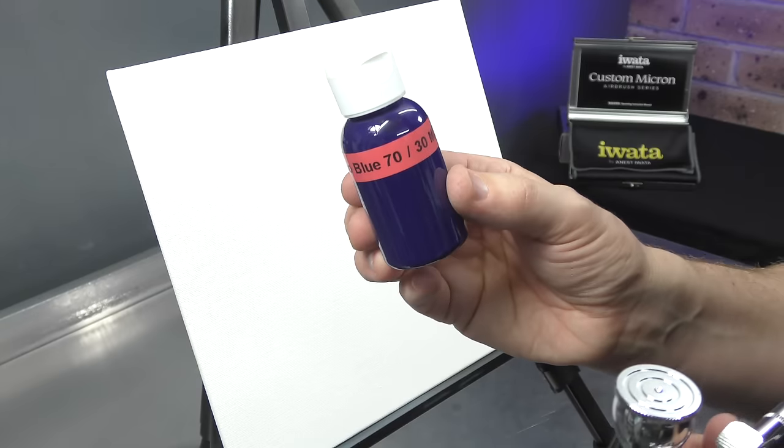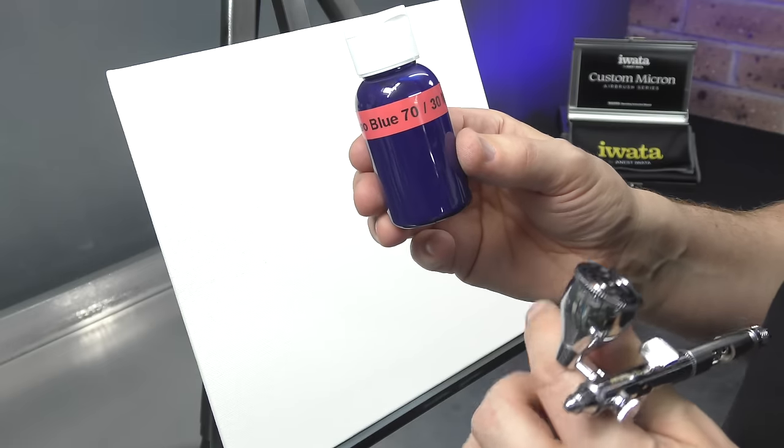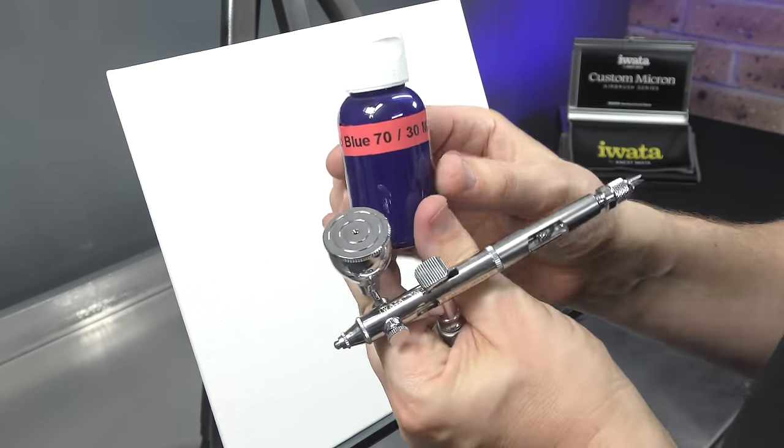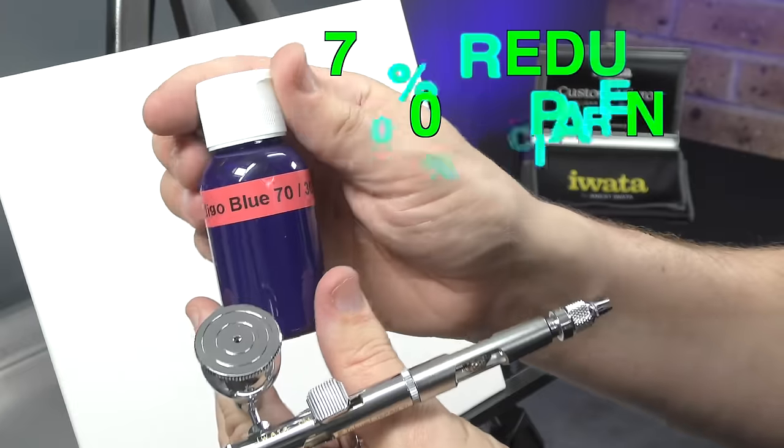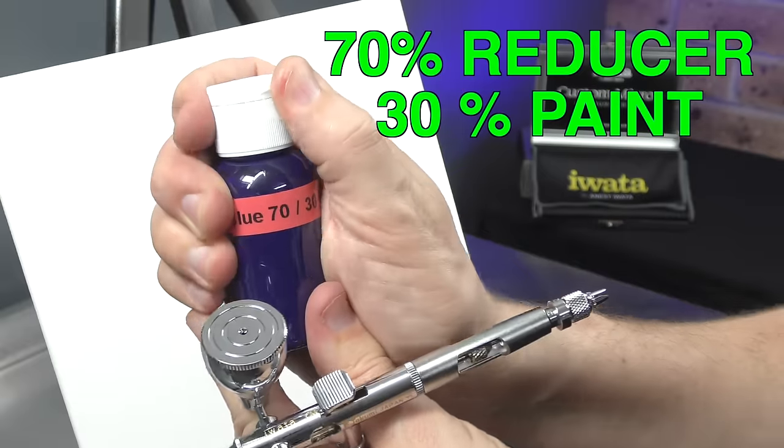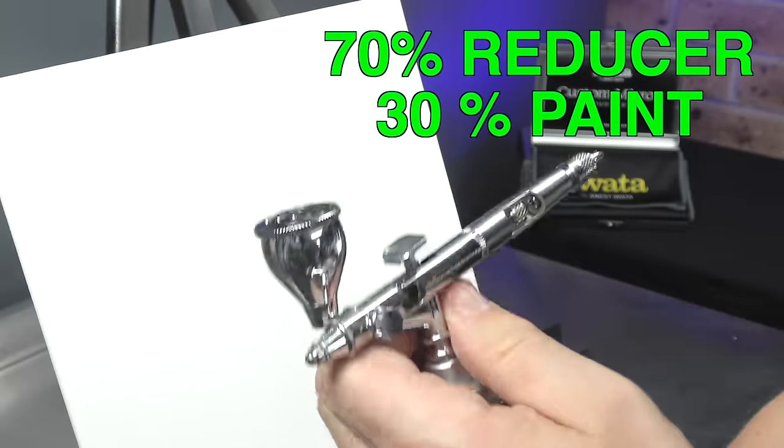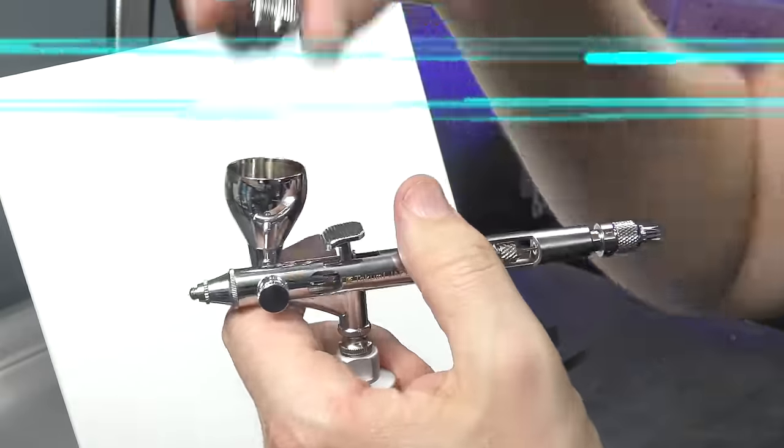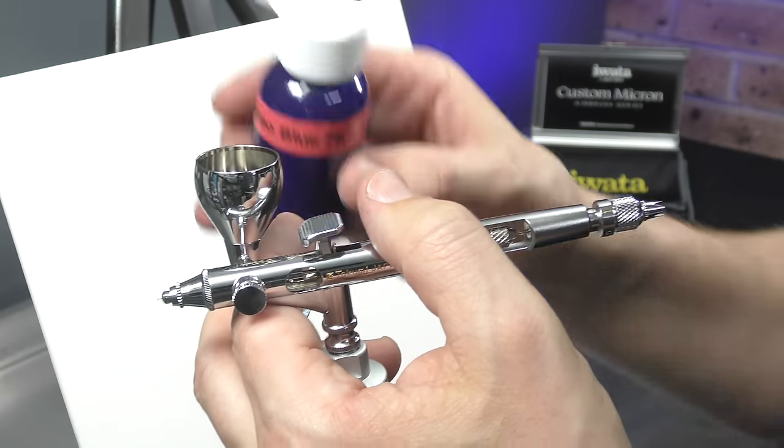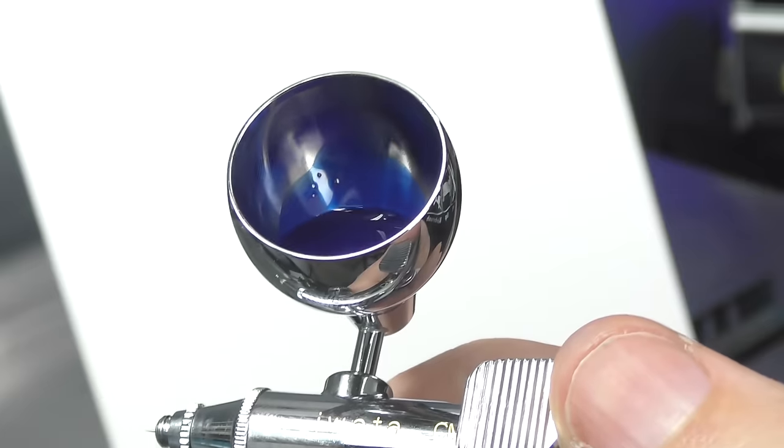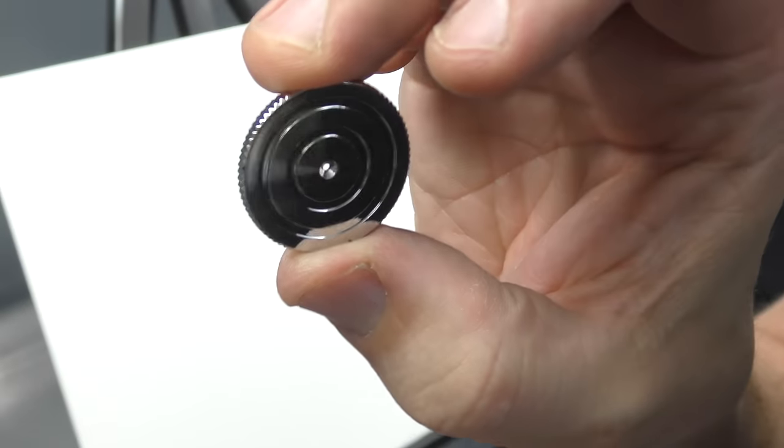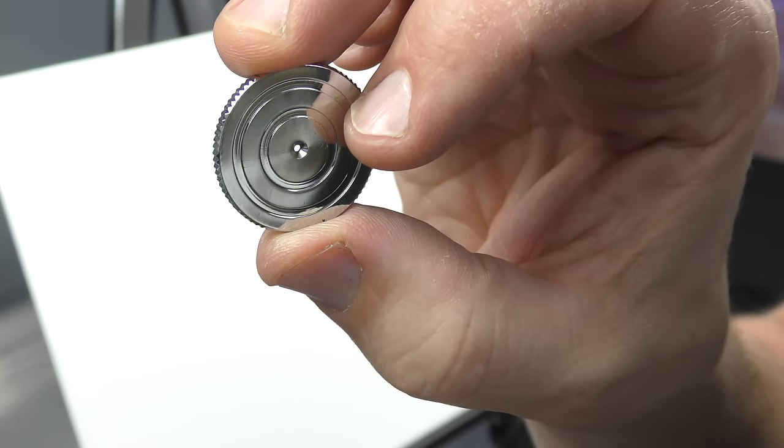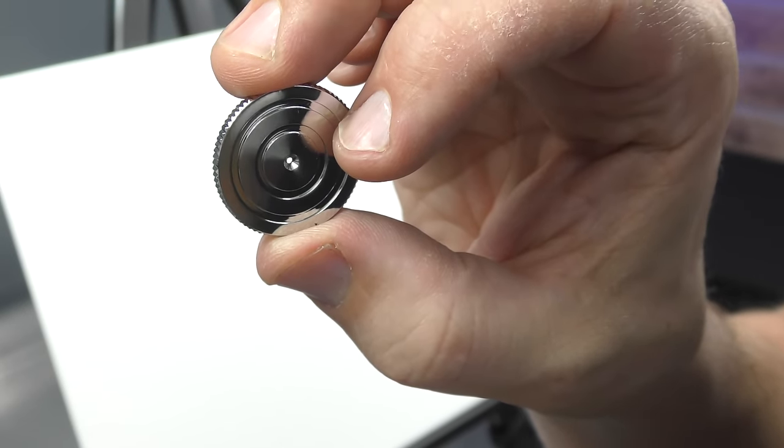I'm going to use some Indigo Blue by Trident to test this brush. You can use any particular brand of paint, just thin it to your liking. For the Trident, I like working with a 70 to 30 mix, which is 70% reducer, 30% paint, especially when airbrushing with fine detail brushes. I'm not going to totally fill it up. You can see how much I've got in the inkwell. You also want to make sure that that hole is always clear. If that blocks up, that's going to give you issues with your paint flow. We'll do some coverage first.